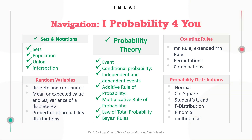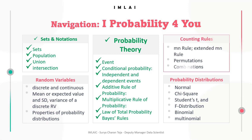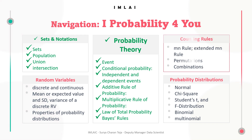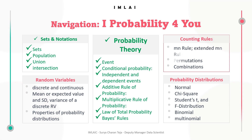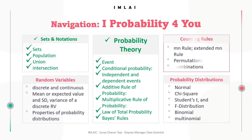With this, we have completed probability theory. Now we will be getting into counting rules, also called counting principles. Here we'll cover the MN rule, extended MN rule, permutations, and combinations. Once that is done, we will get into random variables and then probability distributions.